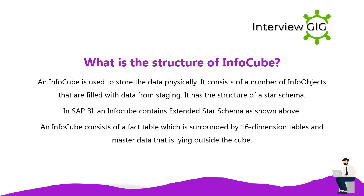What is the structure of an InfoCube? An InfoCube is used to store data physically; it consists of a number of InfoObjects that are filled with data from staging. It has the structure of a star schema. In SAP BI, an InfoCube contains an extended star schema: it consists of a fact table surrounded by 16 dimension tables and master data lying outside the cube.